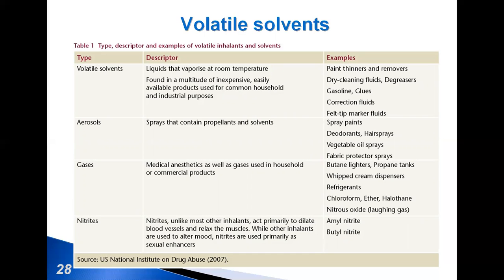Inhalant abuse can lead to major cognitive impairments in short-term memory, attention, response inhibition, and problem-solving. Treatment methods usually include advice from physicians or social workers, family and special group support, and self-help.